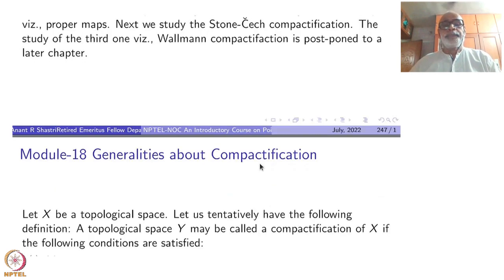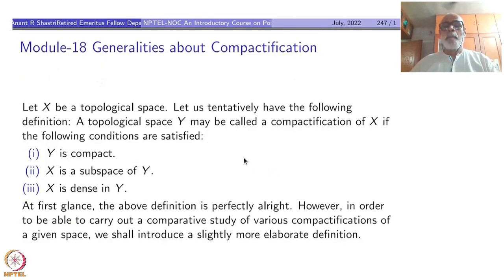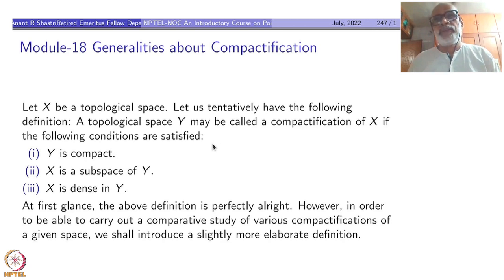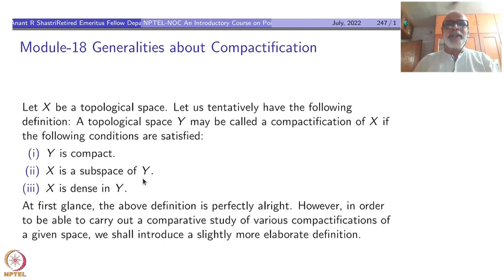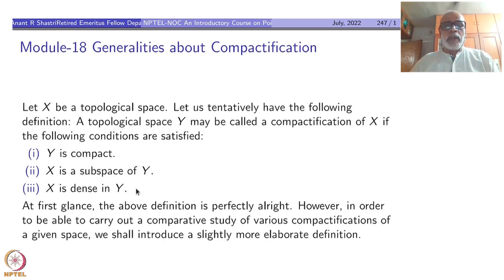Welcome to module 18. First, we shall discuss some generalities about compactification. Let's explore topological spaces. Let us tentatively have the following definition. A topological space Y may be called a compactification of X if the following conditions are satisfied: Y is compact; X must be a subspace of Y, so the given space X is enlarged to a compact space; and X must be dense in Y. These are the three stipulations.